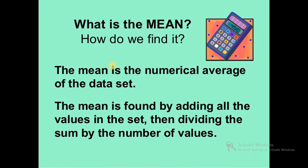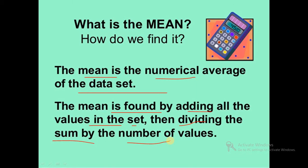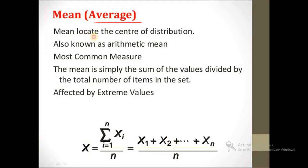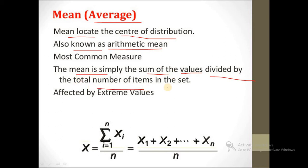So what is the mean? The mean is the numerical average of the data set. The mean is found by adding all the values in the set, then dividing the sum by the number of values. This is the arithmetic mean — total sum divided by number of values — giving us the average value of the set. The mean locates the center of distribution, and is the most common measure.